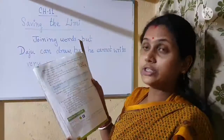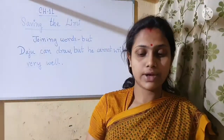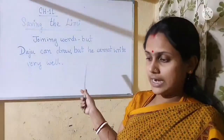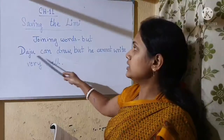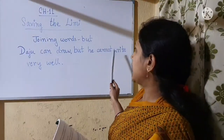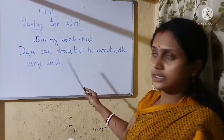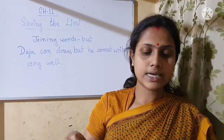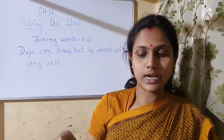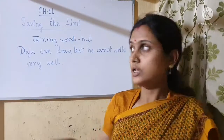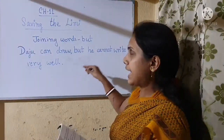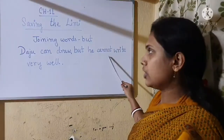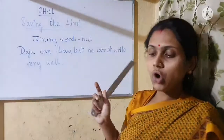Turn to page number 122. In the sentence given on the previous page, these two parts have two different ideas. One is that Daju can draw nicely, and another is that he cannot write very well. So one is an action that Daju can do, and the other is an action that Daju cannot do very well. So two opposite ideas.